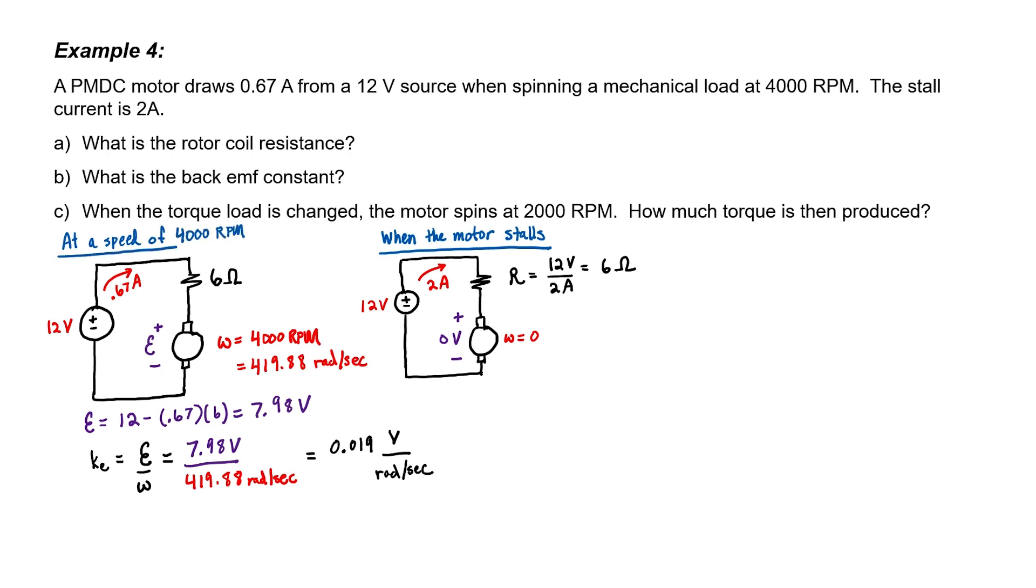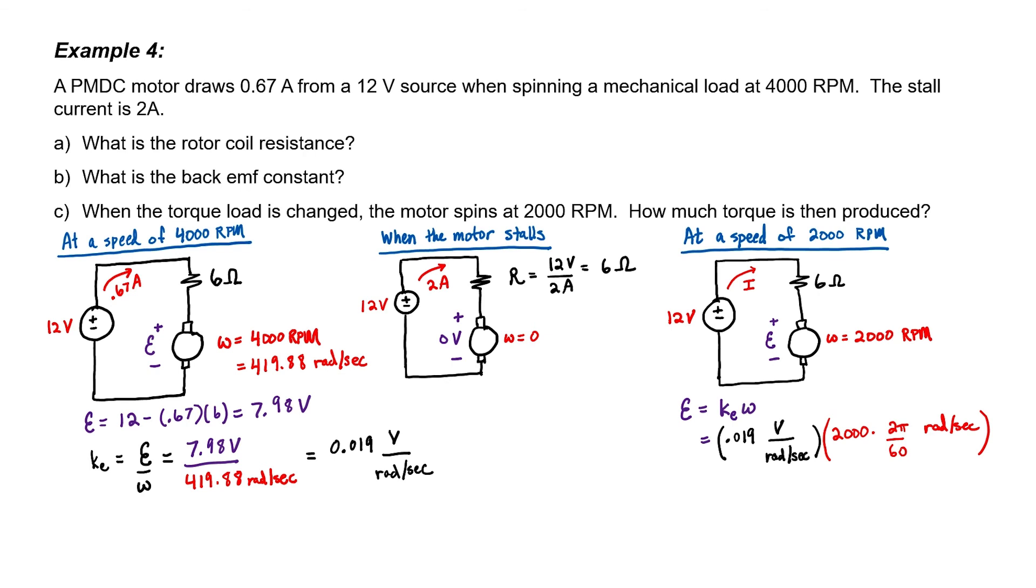Let's now work out the situation at 2000 rpms. Our source is still 12 volts, just like it was before, but we might have a different current being drawn. Our rotor coil resistance is 6 ohms, just like it was before. We don't know the current or the back EMF, but it's not difficult to find the back EMF, given that we have the back EMF constant. The back EMF works out to 3.99 volts. I can now apply Ohm's law to find the current through this resistor. Current equals voltage divided by resistance, and I now know that the current is 1.33 amperes. The torque is the torque constant times the current, so it's relatively straightforward to calculate the torque as 0.025 newton meters.